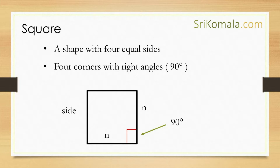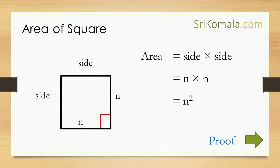Let us call the side as n. We may have already known that the area of a square can be calculated as side times side, or n times n. The formula can also be stated as n squared.